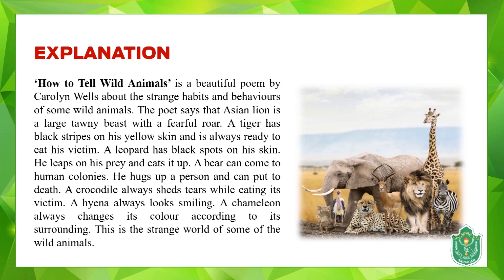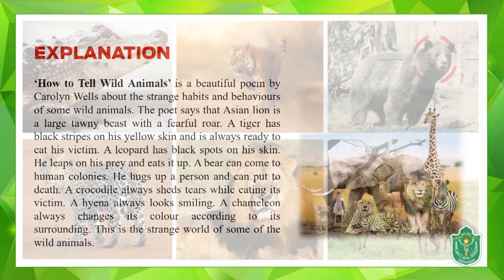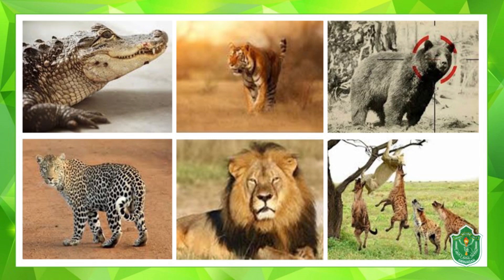She says the Asian lion is a large tawny beast with a fearful roar. A tiger has black stripes on its yellow skin and is always ready to eat its victim. A leopard has black spots on its skin — it's a beautiful but very dangerous animal that leaps on its prey and eats it up. Then she describes the bear as one of the wild animals that can come to human colonies in search of food.